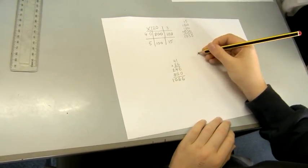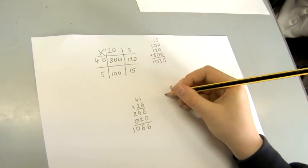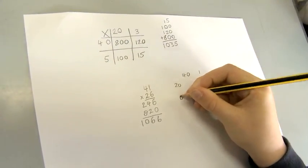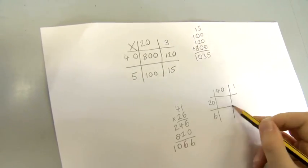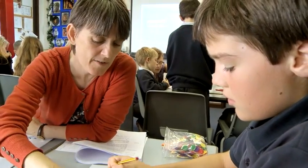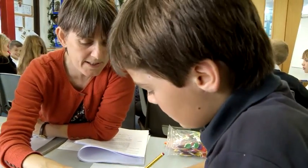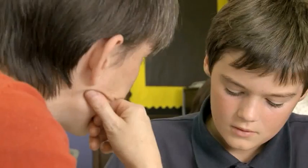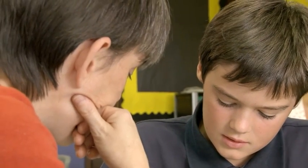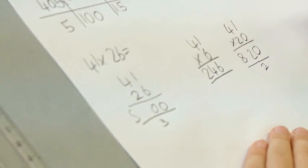When the children are moving from the grid method to the standard algorithm, I want them to see first of all that I've condensed the steps. Where they were doing four steps in the grid, they're now going to do two in the standard algorithm. For some children who find that move more difficult, I might encourage them to do two separate algorithms — so they might do 6 multiplied by 32 and then 20 multiplied by 32, and combine those.